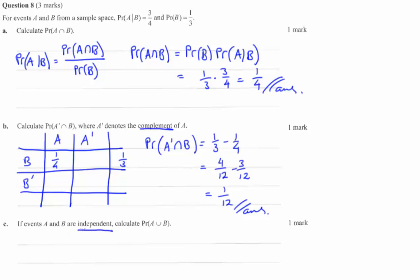Now, part C. If events A and B are independent, calculate the probability of A union B. So your only choice here is the addition rule of probability, which is the probability of A union B. So the probability of A, plus the probability of B, subtract off that intersection.